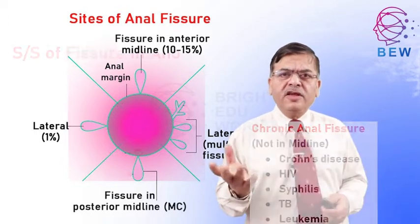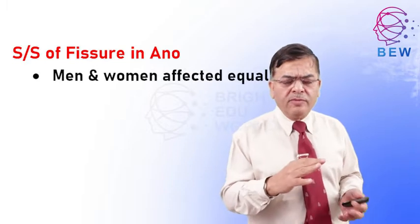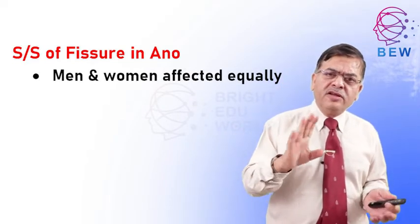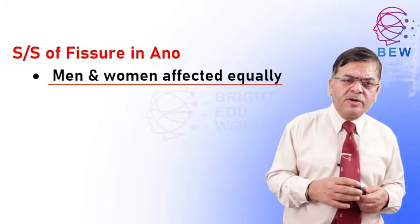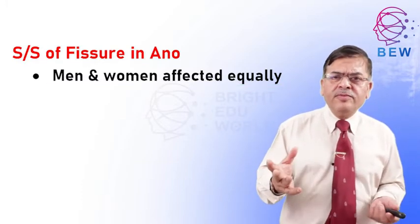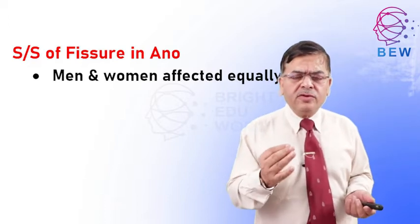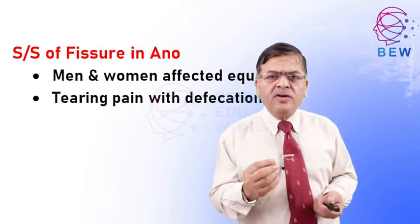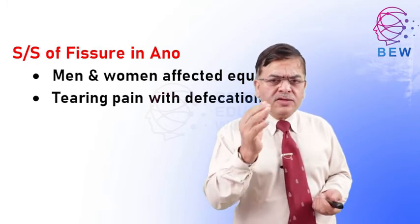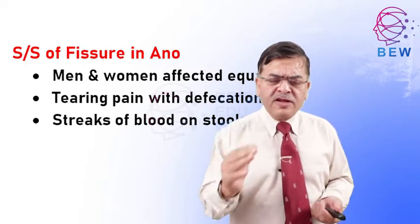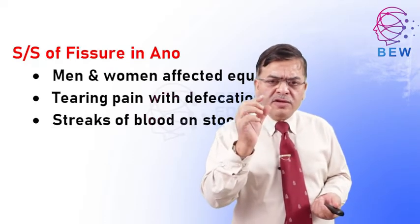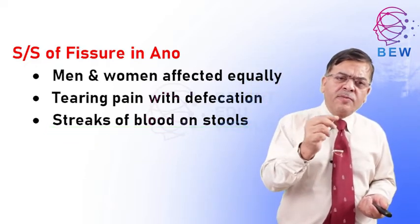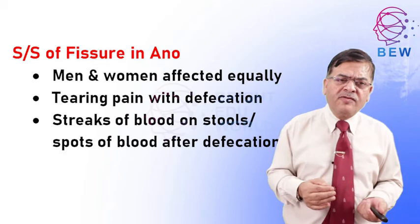The condition is seen equally in both sexes; only the position may differ. The most typical symptom is a tearing pain during defecation, followed by either blood-streaked stool or drops of blood following the act of defecation.